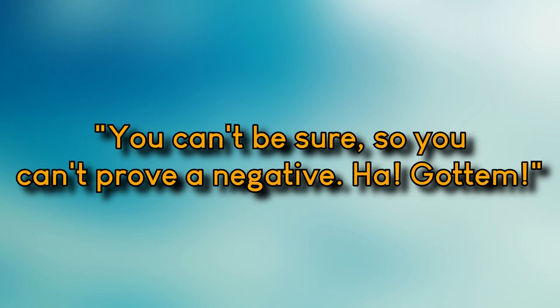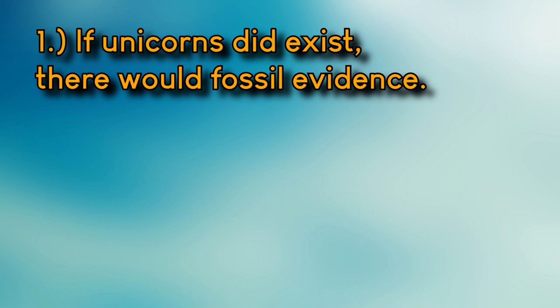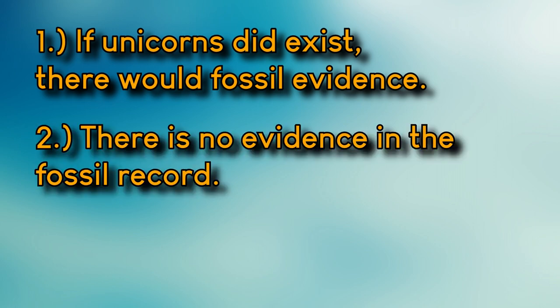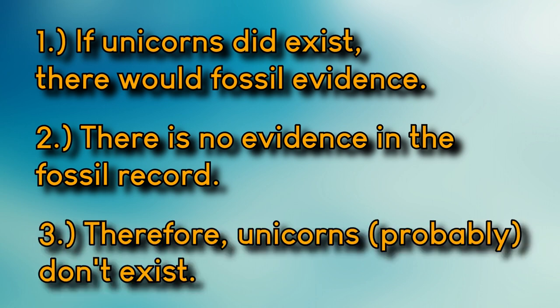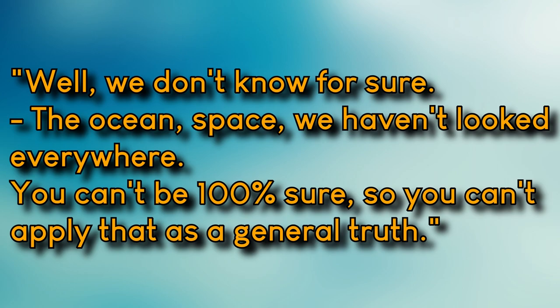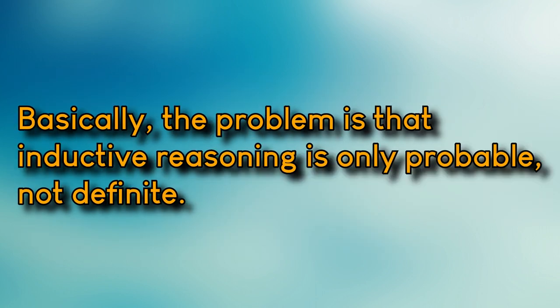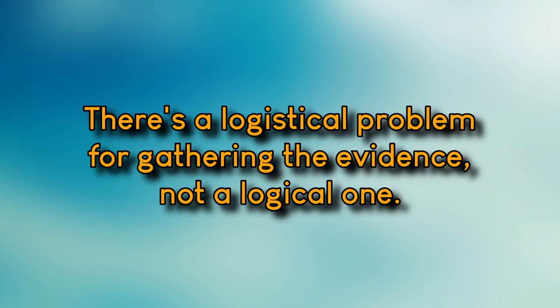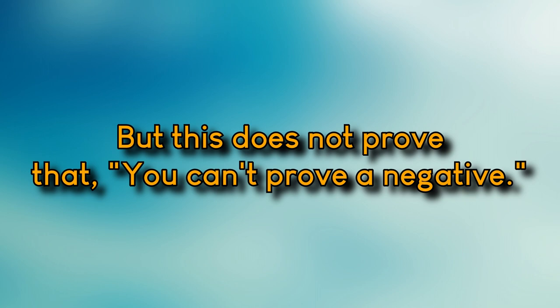Some people use the uncertainty of inductive arguments as evidence that you can't prove a negative. For example, do unicorns exist? Obviously not — but how are you sure? You might argue: 1) If unicorns had existed, there would be evidence in the fossil record; 2) There is no such evidence; 3) Therefore unicorns never existed. But I could counter: we've only explored 5% of the oceans — maybe unicorns are down there. You can't make a universal negative claim due to lack of information. The problem is inductive arguments are only probable, not definite, and we can't logistically search the entire ocean or observable universe for unicorns. But this isn't evidence that you can't prove a negative at all.